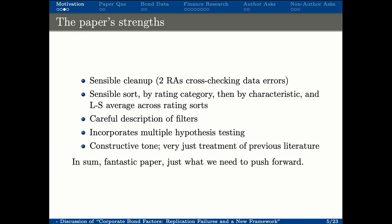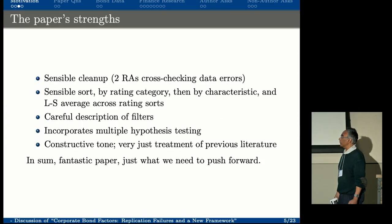This paper's contributions are substantial. Jens did a great job: sensible cleanup, RAs and cross-checking, sensible sorts by ratings and characteristics, and very careful description of filters—unlike other papers that seem to slide things by. They did an outstanding job explaining exactly what steps remove how many observations. We need more of that. They also incorporate multiple hypothesis testing—the MHT, Benjamini and so on. And they have a very constructive tone and just treatment of the previous literature, unlike one paper in the JFE that is just attacking. I thought that was very important.